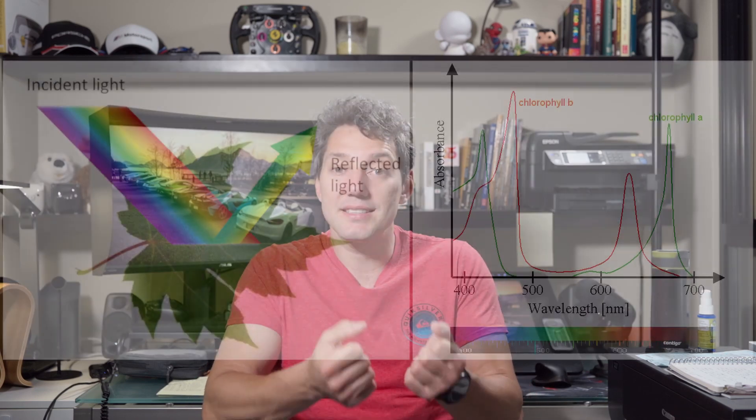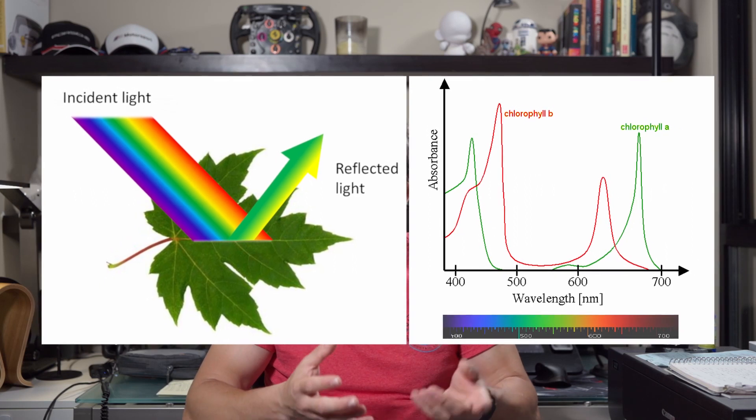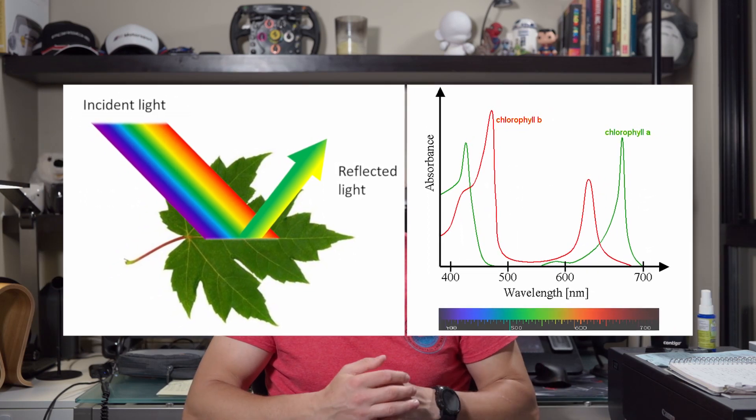Pigments are molecules that interact with the light: they absorb certain frequencies and then reflect others. If a pillow, for example, is green, that's because its pigments are absorbing all the frequencies of the light except the green, which is then bounced back into our eyes.